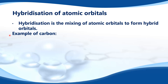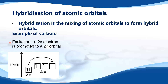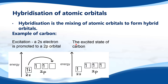Let's look at the example of carbon. The first stage is excitation, and that's when a 2s electron is promoted to a 2p orbital. Here we have the ground state electron configuration of carbon: 2s2, 2p2. During the excitation stage, an electron from the 2s orbital is promoted to a 2p orbital, giving us the excited state of carbon.